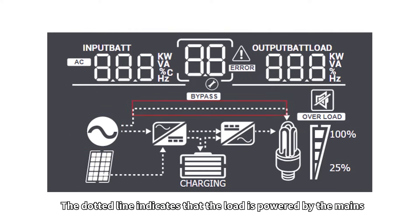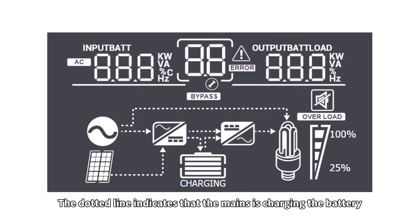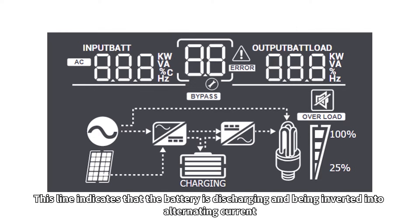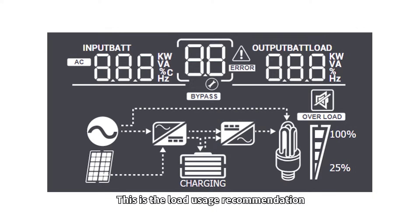The dotted line indicates that the load is powered by the mains. The dotted line indicates that the mains is charging the battery. This line indicates that the battery is discharging and being inverted into alternating current. This is the load usage recommendation.